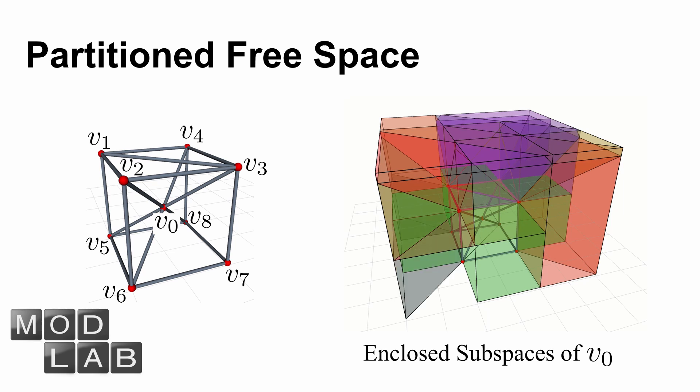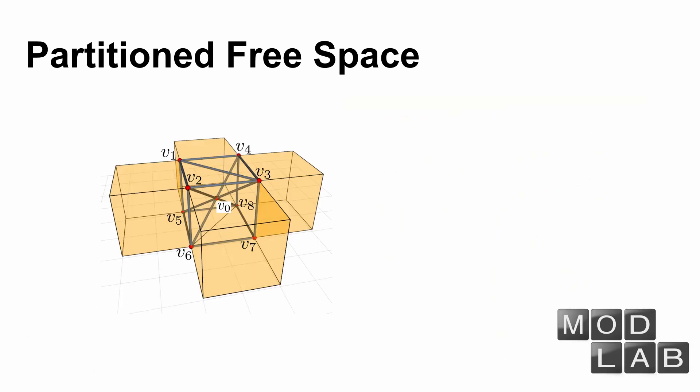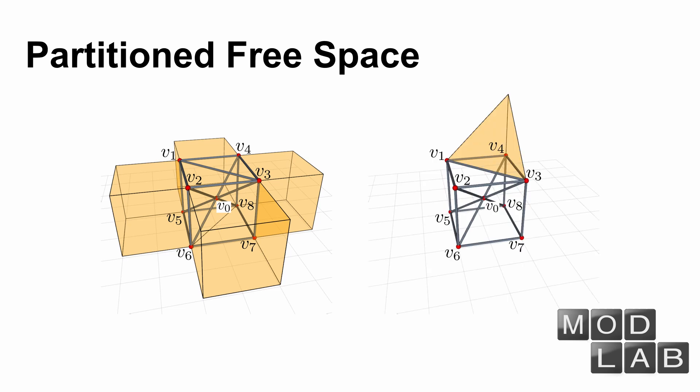We present a fast algorithm to search all enclosed subspaces in the free space of a node. For example, if the node V0 wants to go from its initial position to a position inside this pyramid subspace, we need to split the node in order to overcome the internal obstacle.